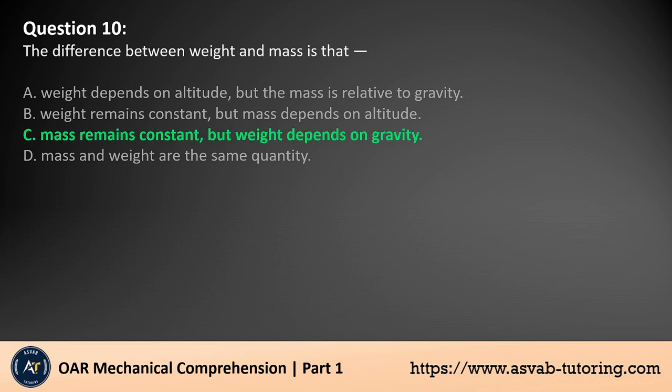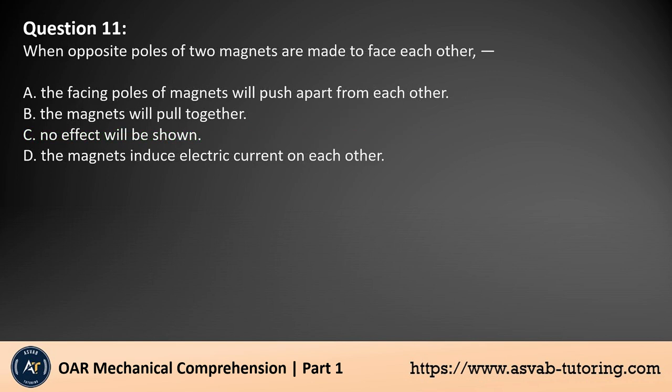Mass is the measure of the amount of matter in an object and remains constant regardless of location. Weight, however, is the force exerted by gravity on that mass and varies with the strength of the gravitational field. Therefore, an object's weight changes with changes in gravity — for example, on different planets — while its mass stays the same.